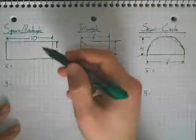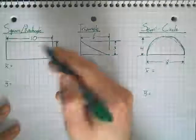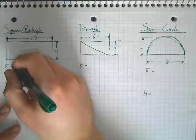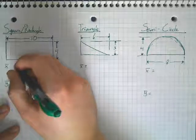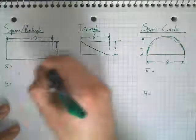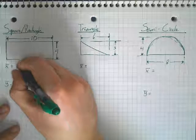So, looking at our square and rectangle, before we look at our dimensions, let's write down what our equations for the square, rectangle, centroid location is. And if we're looking at our x direction here, that's going to be our base divided by two.